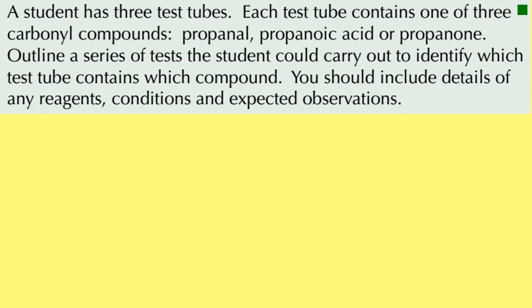Here's another question. A student has three test tubes: one contains propanal, an aldehyde; one contains propanoic acid, a carboxylic acid; and one contains propanone, a ketone. The question asks us to outline a series of tests to identify which test tube contains which compound, including reagents, conditions and observations. Let's write our three compounds down: propanal, propanoic acid, and propanone.